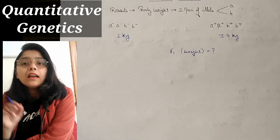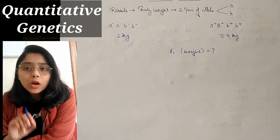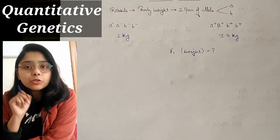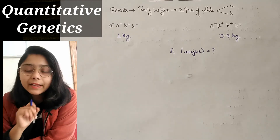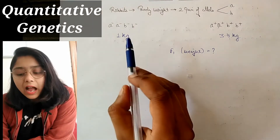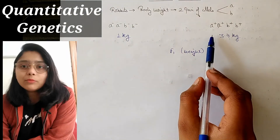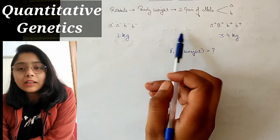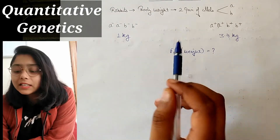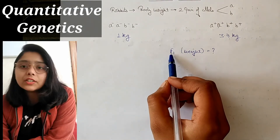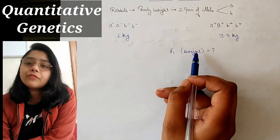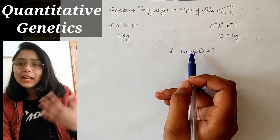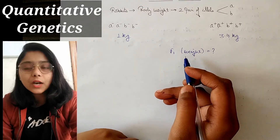Quantitative genetics का numerical solve करने के लिए always extreme points रहेंगे and genotype चाहिए जिनका हमें weight निकालना है. यहाँ हमें extreme highest and extreme lowest मिल गया है. उन्होंने इन दोनों का cross कराया, और F1 generation का body weight हमें find करना था. यह हमारा quantitative genetics का question है.